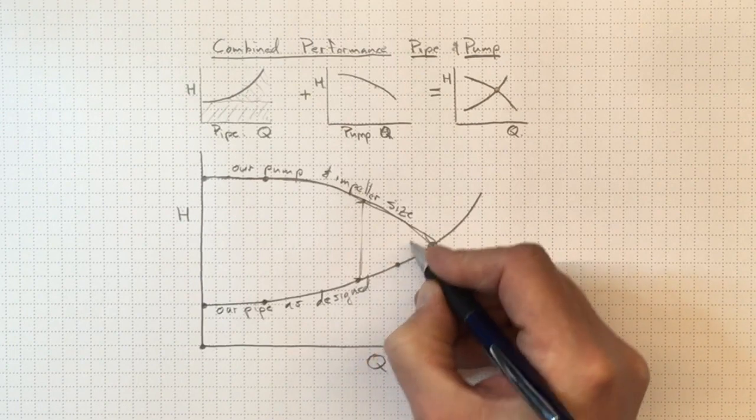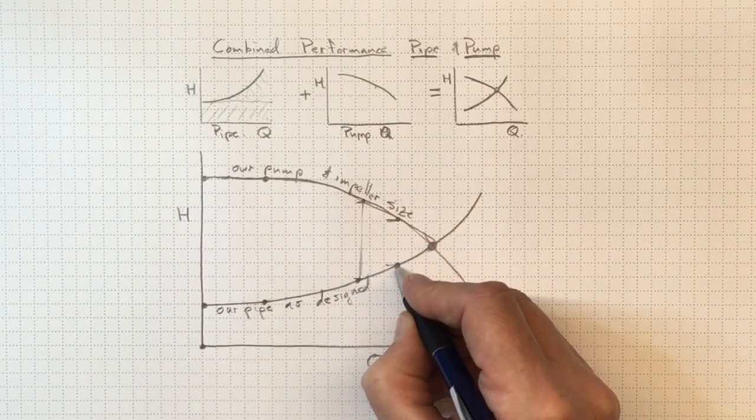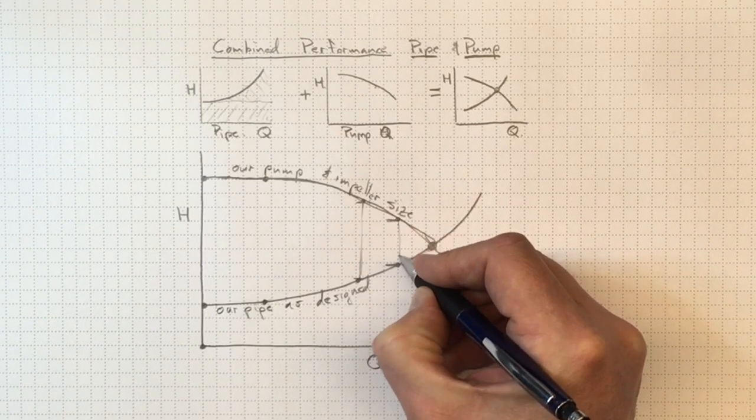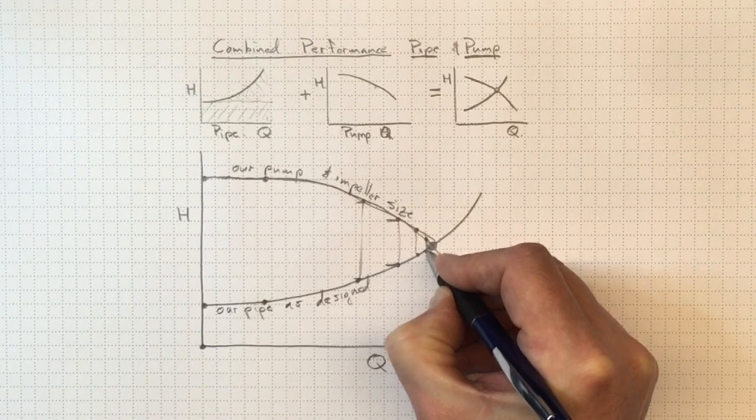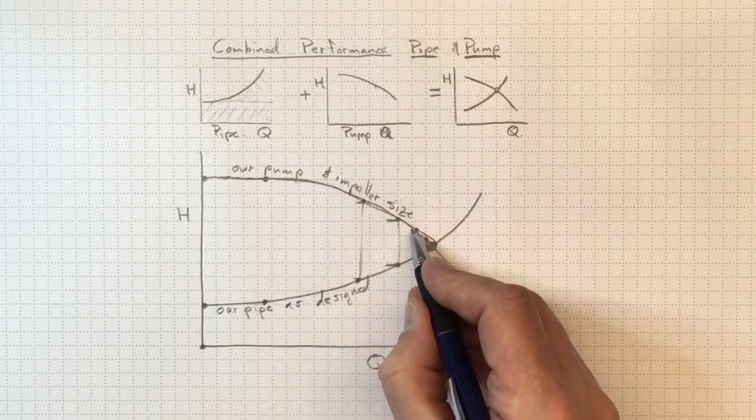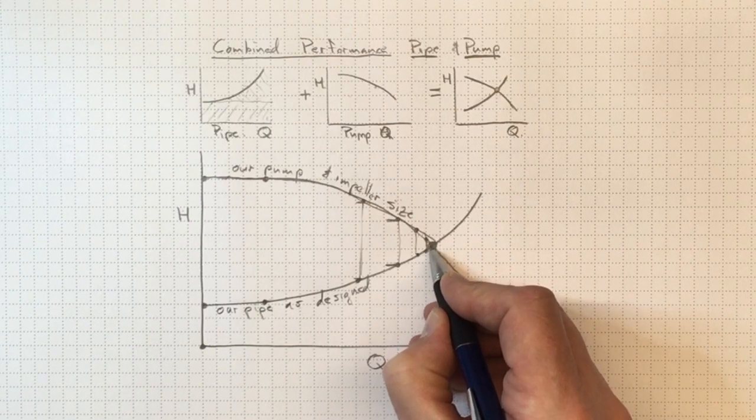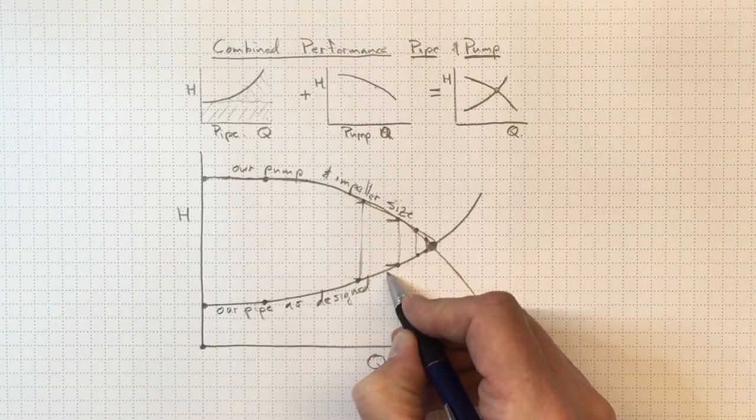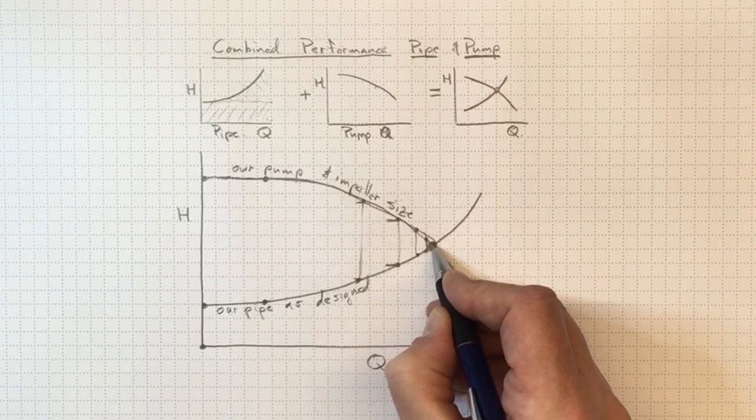But we're still going to see the flow increasing. But the difference between what the pump is providing to push the flow and the head which the piping system is resisting with, this gap is getting smaller and smaller and smaller. So eventually we'll move to the point here where we've got no difference between what the pump is delivering and what the resistance of the piping is. So now we've got no unbalanced forces on the water in the pipe. We've got an exact balance between the elevation and the losses against what the pump is putting in. And that's a stable operating point.